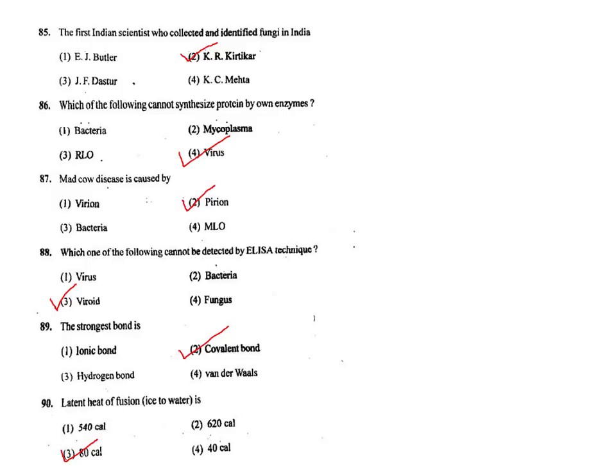Q90. Latent heat of fusion of ice is 80 calories. The correct answer is option 3.